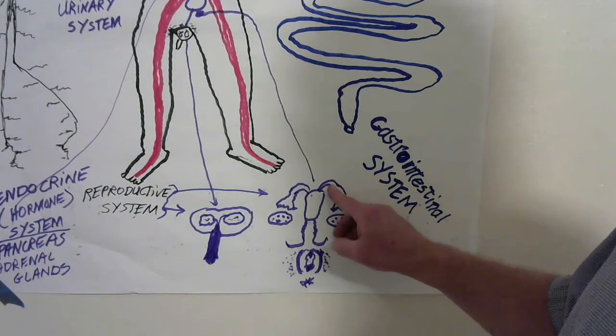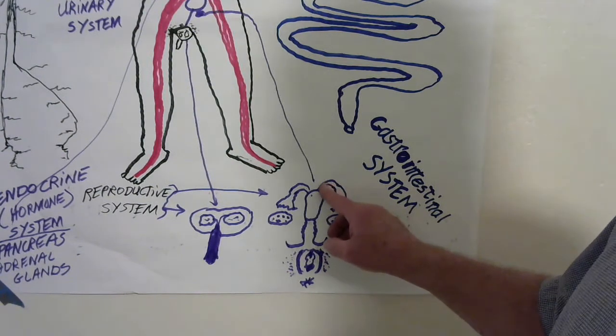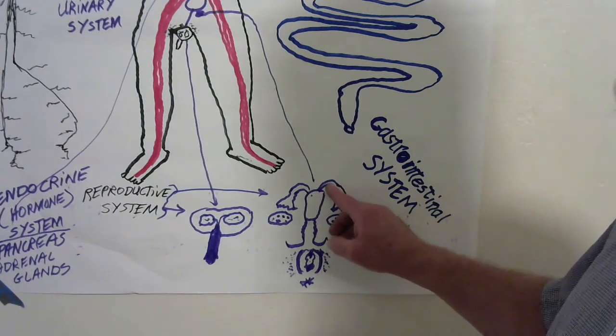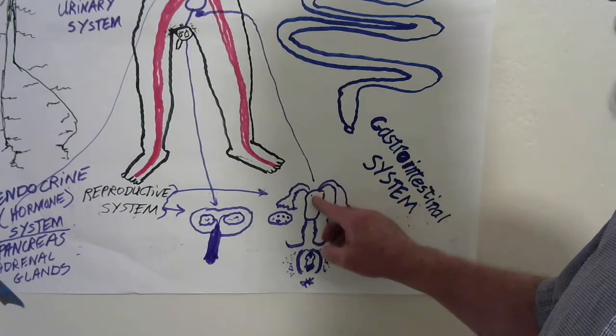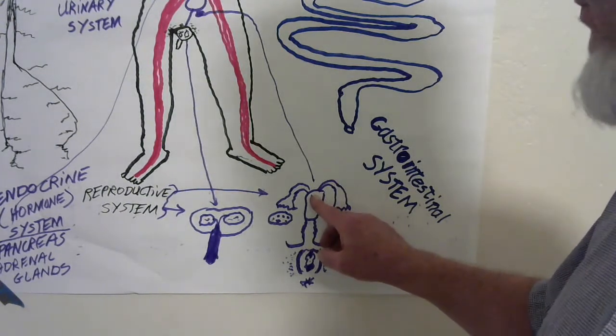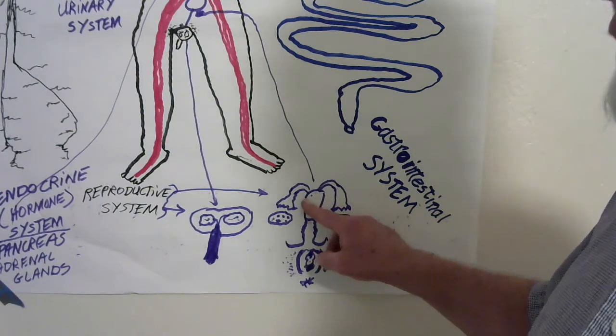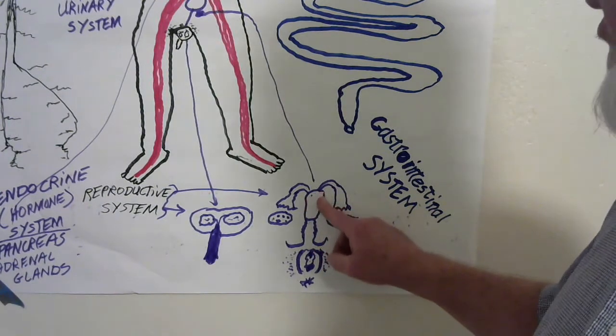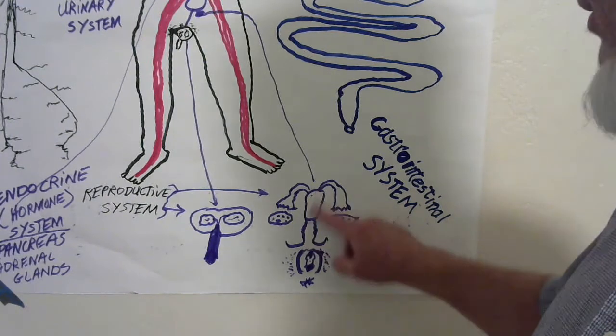Once conception has occurred, the ovum, having been fertilized, comes down into the uterus, or colloquially called the womb. It attaches to the side of the womb and grows into a baby. During the birth process, the baby comes out of the vaginal canal.